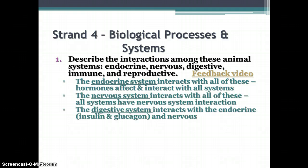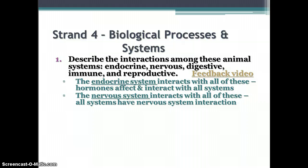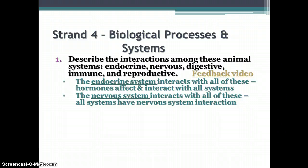The nervous system interacts with all of these also, because all systems have some kind of nervous system interaction — whether it's nerve endings in the skin that let you feel, or whether it's telling your digestive system to undergo peristalsis to carry the food through the system. There are all kinds of interaction between the nervous system and all these systems.